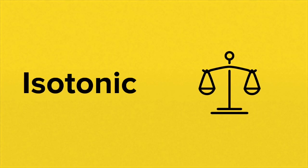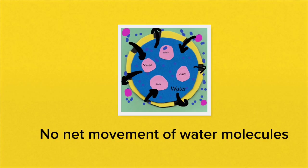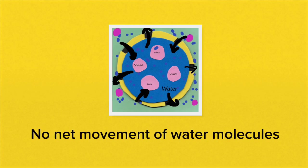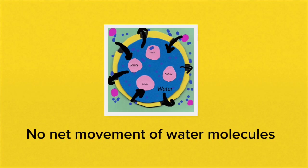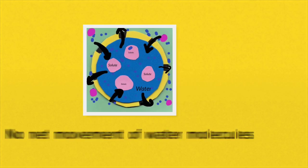There is another scenario when your cells are bathed in an isotonic solution. When your cells are bathed in an isotonic solution, conditions are pretty similar either side of the cell membrane, so there's no net movement of water molecules into or out of the cell, and the cell basically stays the same.